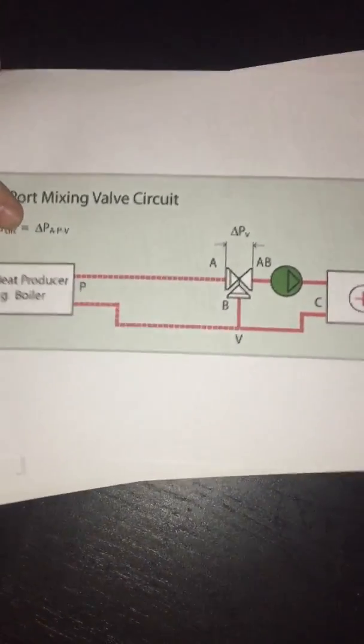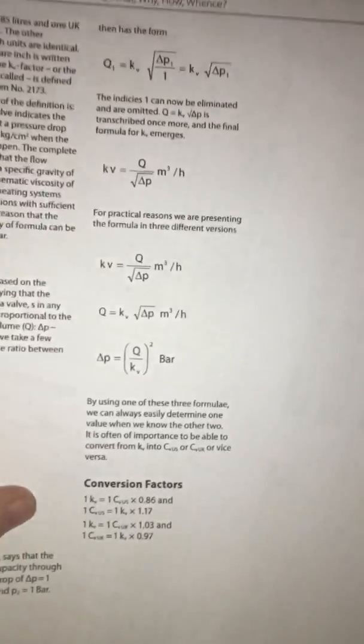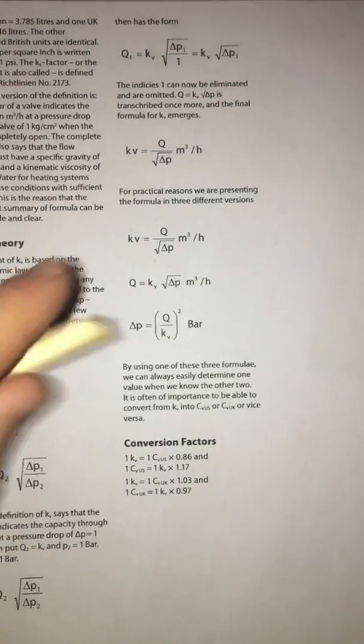So how do we show that? We select the valve with the correct flow coefficient, which is the KV factor, and we calculate it using this formula here.